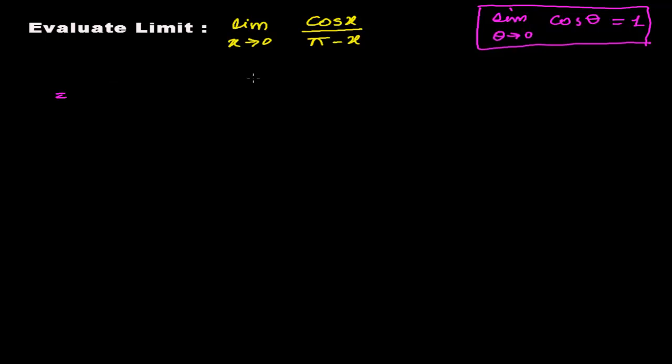Limit when x tends to 0 - here x is the angle of the cosine - cosine of x times 1 divided by pi minus x. I'm separating here. If you compare this whole quantity with the standard form, when x tends to 0, cosine of the angle equals 1.